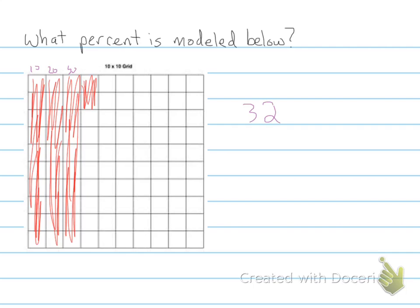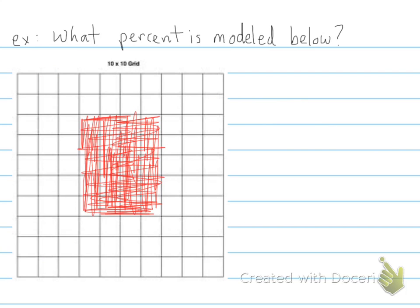One final example: what percent is modeled below? Again, all you need to do since this is a hundred grid, count the number of squares modeled. There's 1, 2, 3, 4, 5, 6, 7, 8, 9, 10, 11, 12, 13, 14, 15, 16, 17, 18, 19, and 20. So this is modeling 20 percent.